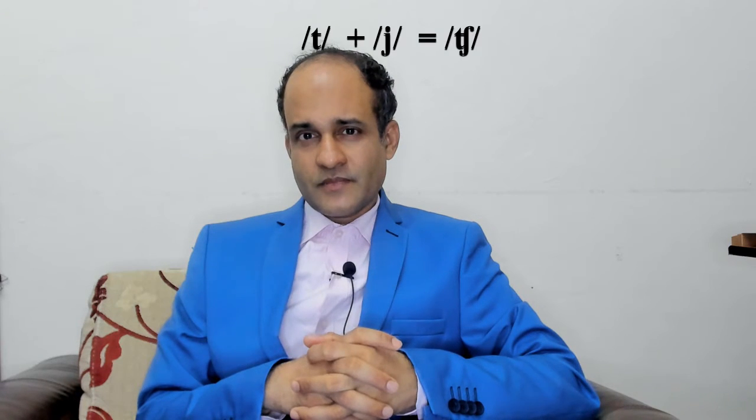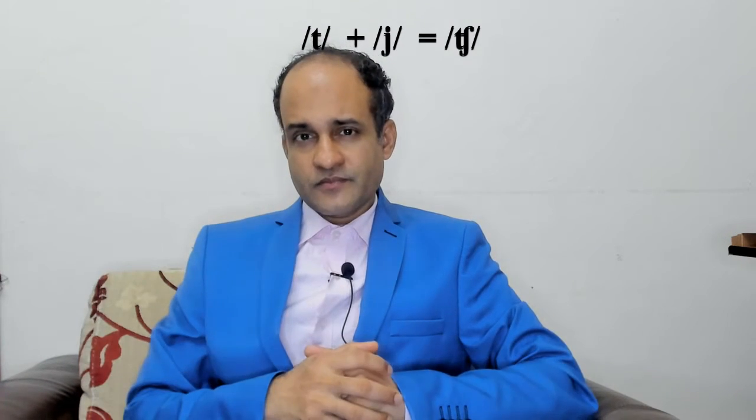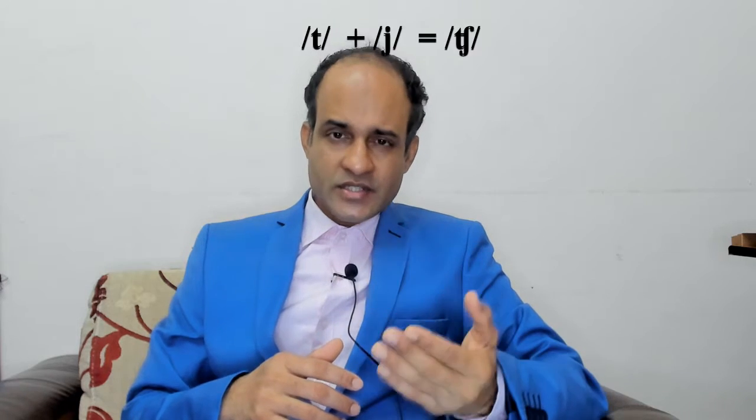Alright, before we get started, if you're new here, please do smash the subscribe button and tap the notification bell. If you're ready, let's begin. We are here to unlock the second secret. When a word ends in a T sound and the next word begins with a Y sound, we combine these sounds and change to a CH sound.